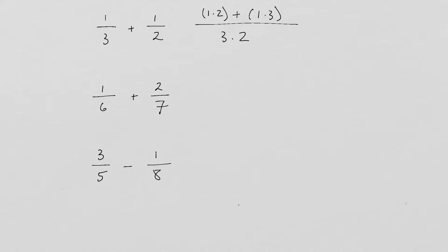So for the numerator we get 2 plus 3, that equals 5. And for the denominator we get 3 times 2, which is 6. So our final answer is 5/6.